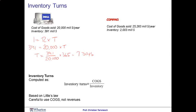Now, do the similar calculation for the case of Compaq. The inventory here is 2 billion dollars. The flow rate is slightly larger, 25,263 million. And if you solve for T, you will get roughly 29 days. So while a dollar has to only spend 7 days at Dell, it will spend 4 times longer — 29 days — at Compaq.